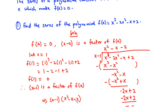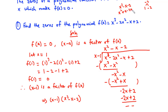Now x² - x - 2 is a quadratic, so we can factor it. The coefficient of x² is 1 and the constant term is -2. We need factors of -2 that multiply to -2 and add to -1: those are 1 and -2. So x² - x - 2 = x² + x - 2x - 2 = x(x + 1) - 2(x + 1), giving factors (x + 1)(x - 2).